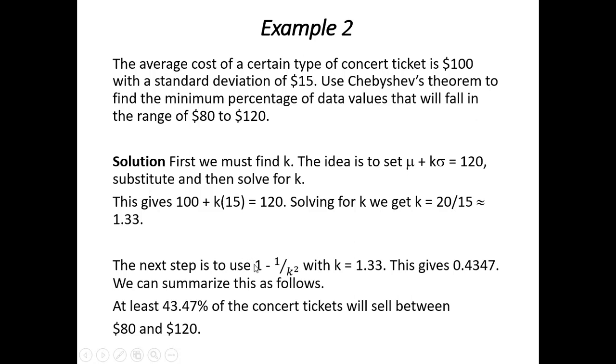Next we'll use our 1 - 1/k² formula with k equals 1.33. When we work this out, we'll get a probability of 0.4347. We can summarize and state that at least 43.47% of the concert tickets will sell between $80 and $120.